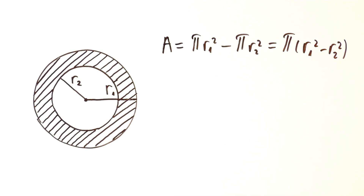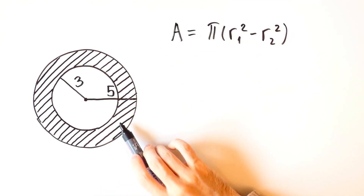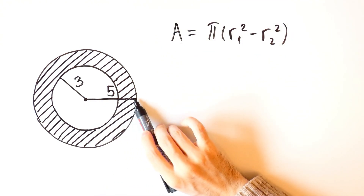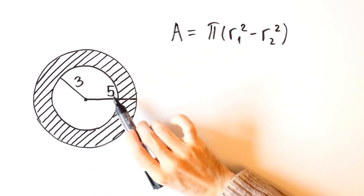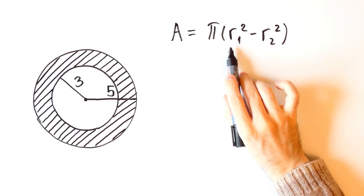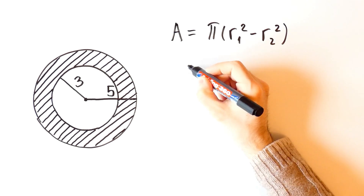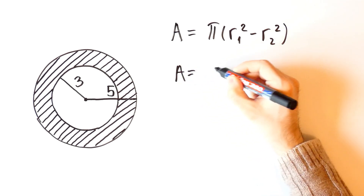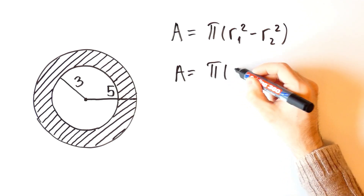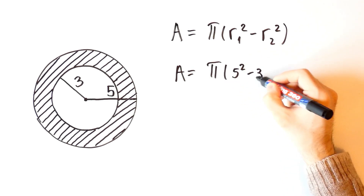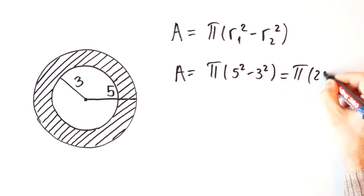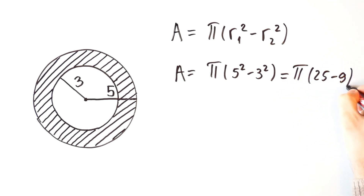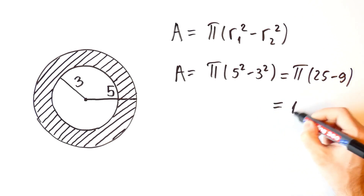Now let's see how we can use it in an example. Here is an annulus with outer radius 5 and inner radius 3. To find the area, we put 5 and 3 in place of R1 and R2. So the area equals π times (5² minus 3²), which is π times (25 minus 9), equal to 16π.